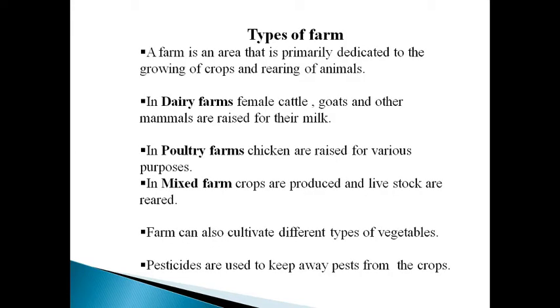Different Types of Farm. A farm is an area that is primarily dedicated to the growing of crops and rearing of animals. Let's discuss the major types of farm.